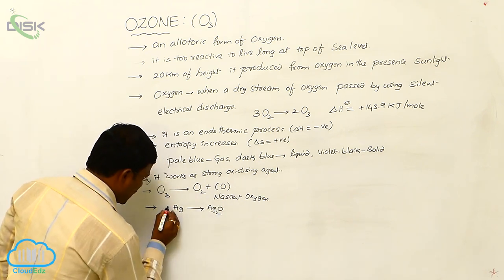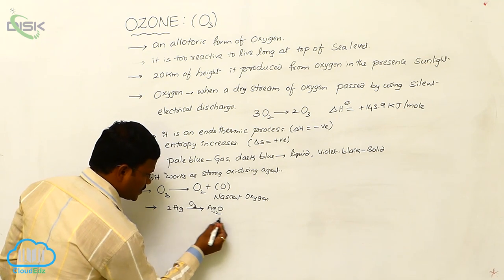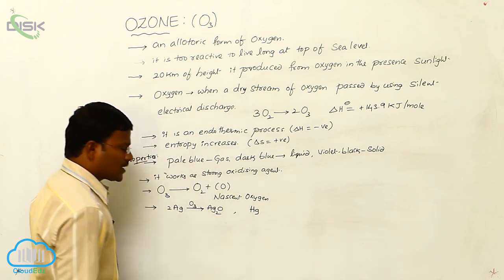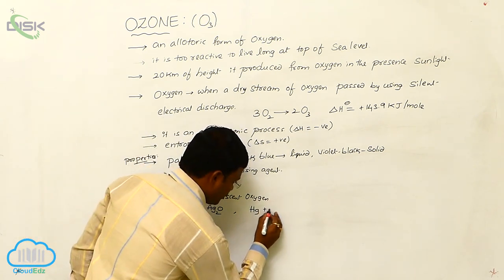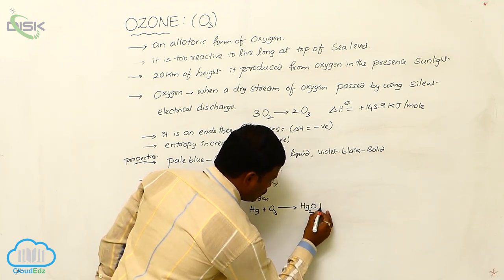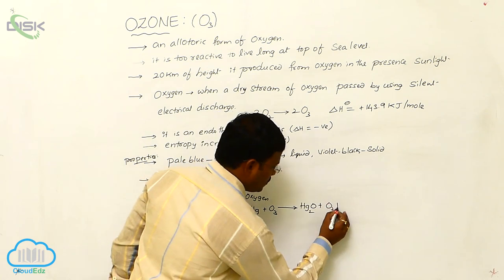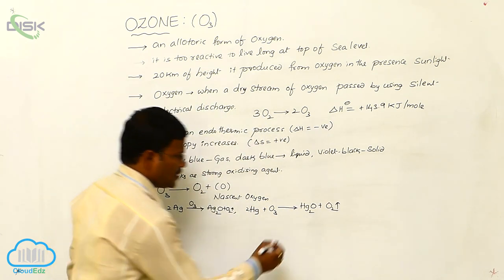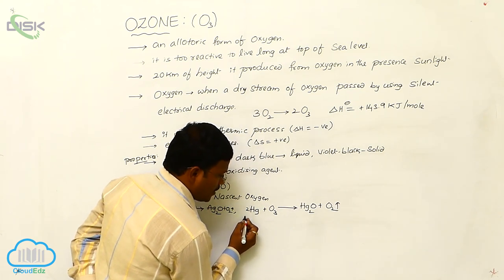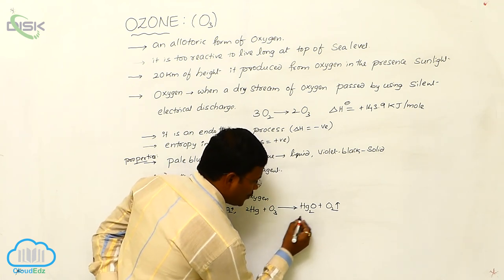We can write this as: 2Ag in the presence of O3 converts into silver oxide. Similarly, ozone can also react with mercury and produce mercurous oxide (Hg2O) plus O2. Here, release of oxygen gas also takes place. This is a most important reaction — mercury undergoes oxidation with ozone to produce mercurous oxide.